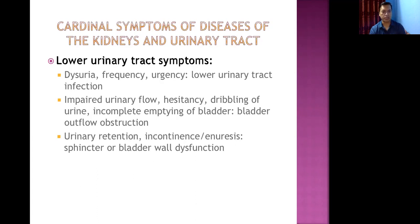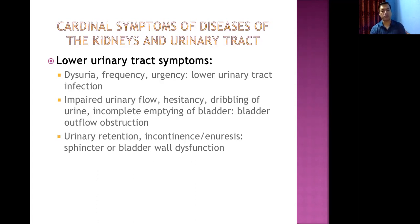Other lower urinary tract symptoms include incontinence — inability to control urine flow, mainly seen in neurological disorders — and enuresis, or bed-wetting. Nocturnal enuresis is considered normal up to age five, but if a child is bed-wetting at night beyond five years of age, a cause needs to be investigated.